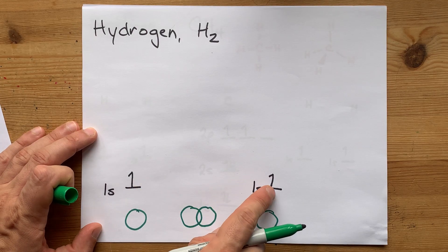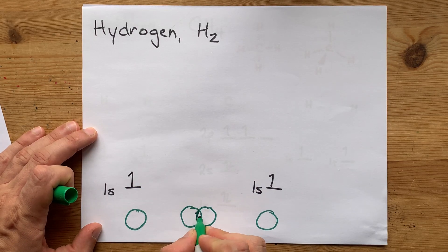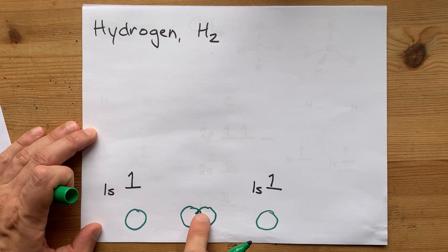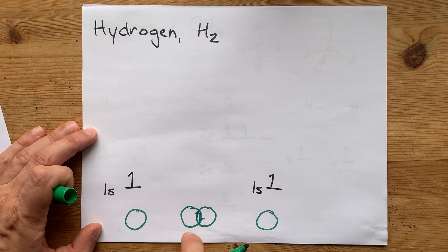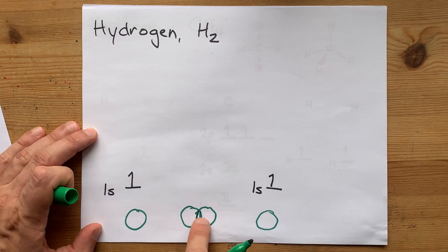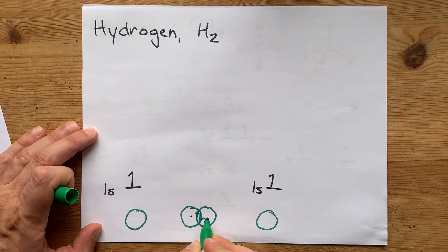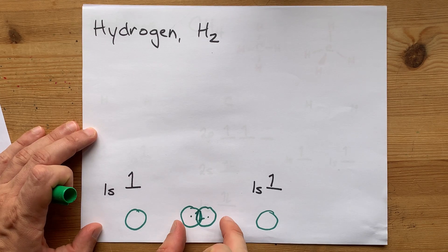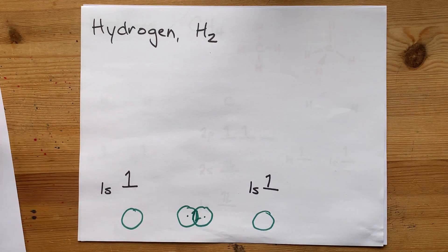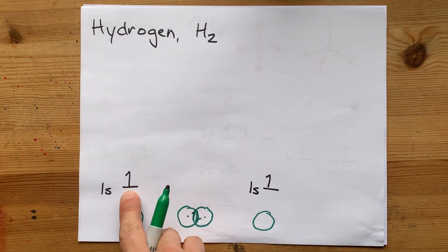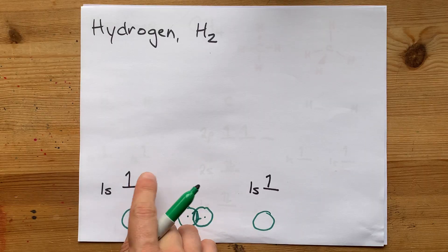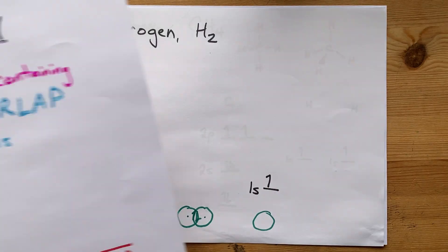This electron will pair up with this electron. They will join in a region in the middle. And those electrons in between the two positively charged nuclei are what hold the nuclei close together. Note that the atomic orbitals that are overlapping each have one unpaired electron.